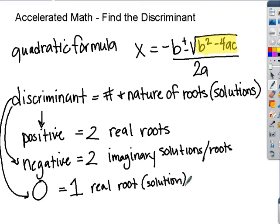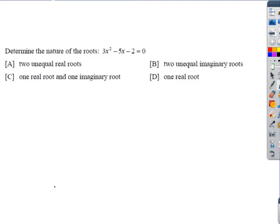So there's a little intro. Remember, if you know the quadratic formula, then you also know the discriminant — it's b squared minus 4ac. Let's try a couple of these problems. We want to determine the nature of the roots. Remember, that's what your discriminant is going to tell you: the nature and how many you have.